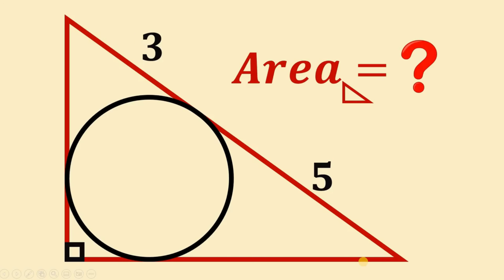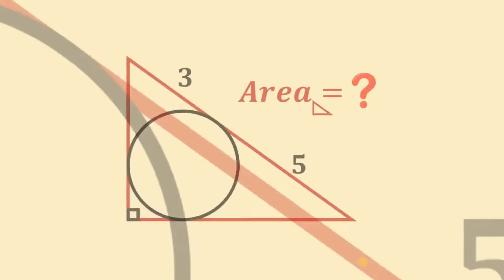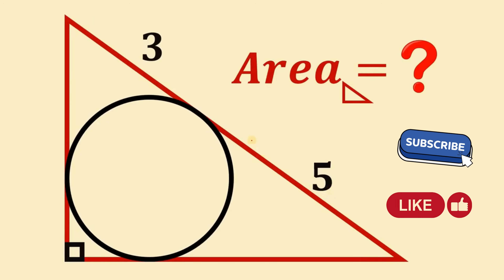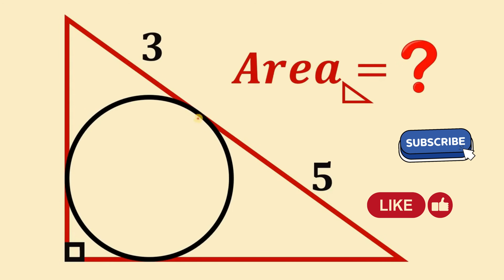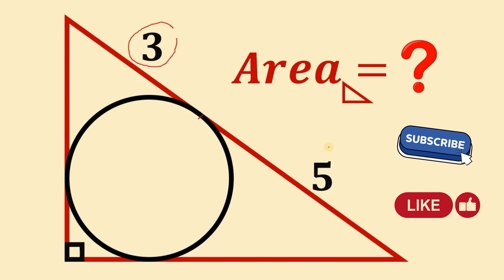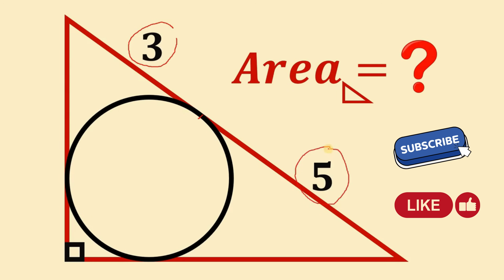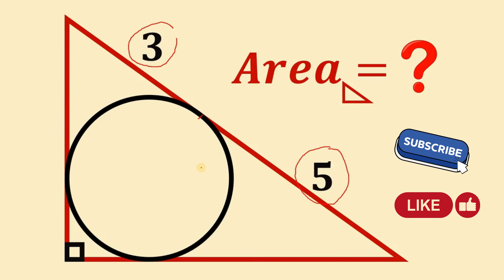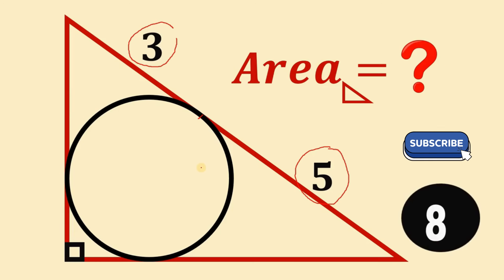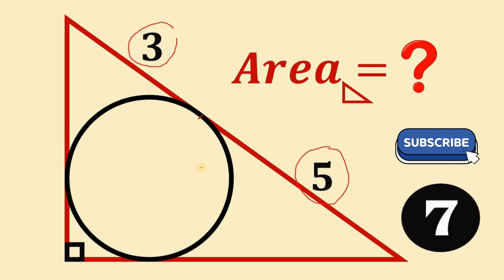Can you solve this geometry challenge? Here's the question. Given this right triangle, the hypotenuse of this right triangle is divided by this segment 3 and this segment 5. The question is: what is the area of this triangle? You can pause this video if you want to give this problem a try.